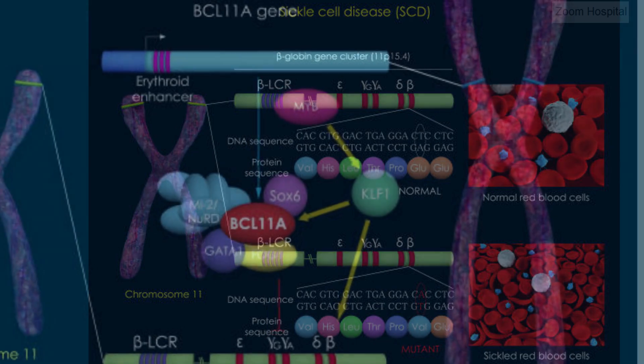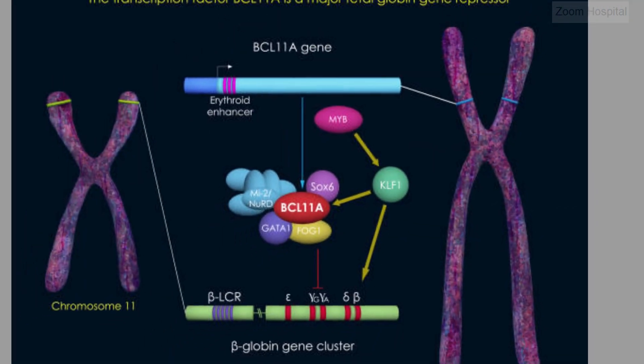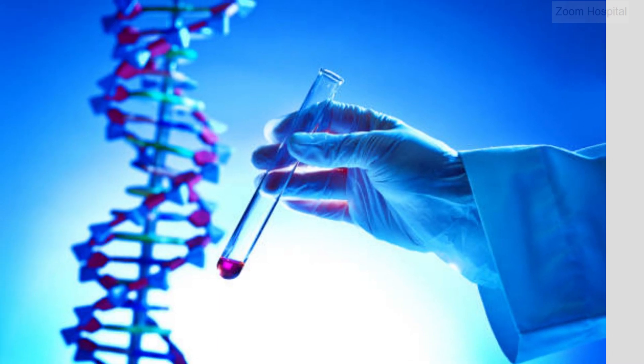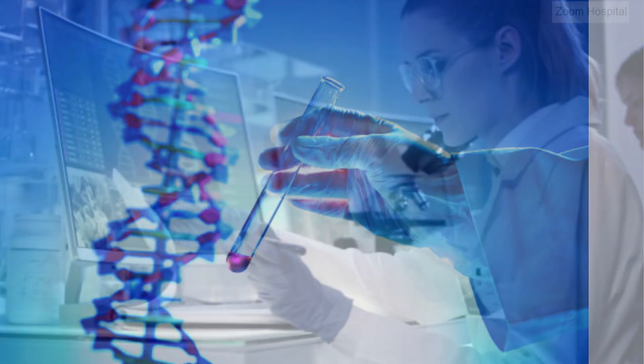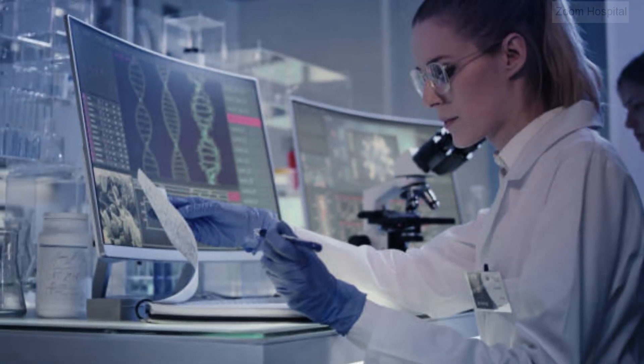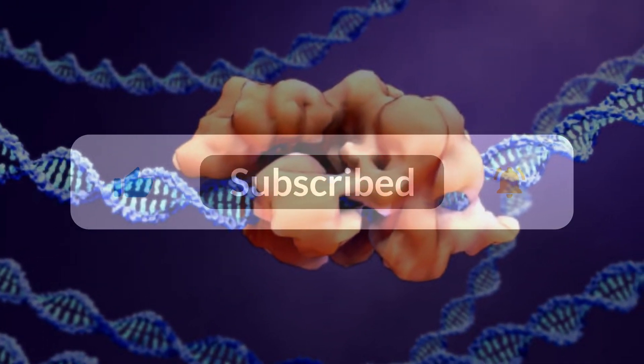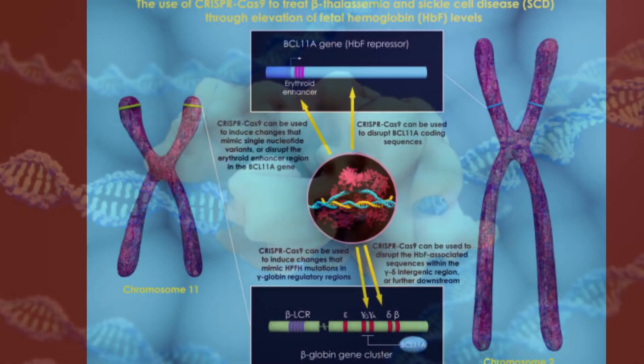Two: Designing the guide RNA. Once the target DNA sequence is identified, a small piece of RNA called guide RNA is designed to match the complementary sequence of the target DNA. This guide RNA serves as a molecular address that guides the Cas9 enzyme to the precise location on the DNA where the edit needs to be made.